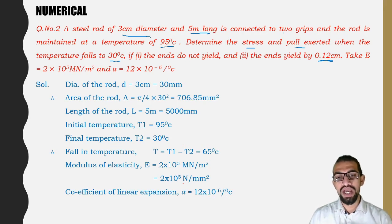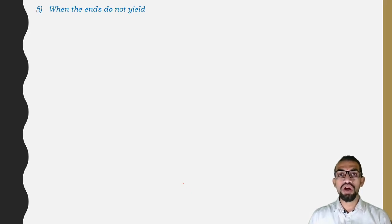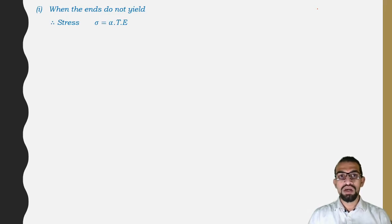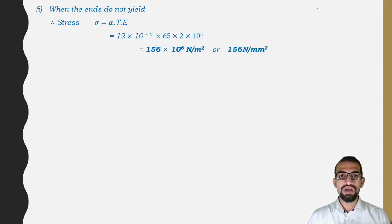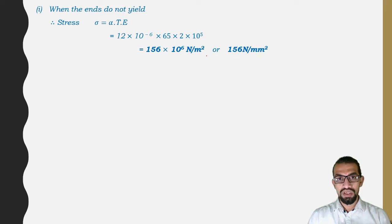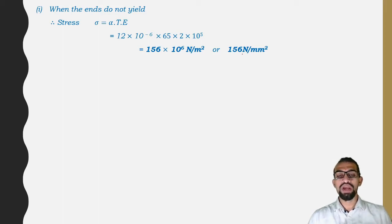When the ends do not yield, stress σ = α × T × E = 12 × 10⁻⁶ × 65 × 2 × 10⁵. This gives 156 × 10⁶ N/m², which when converted equals 156 N/mm².